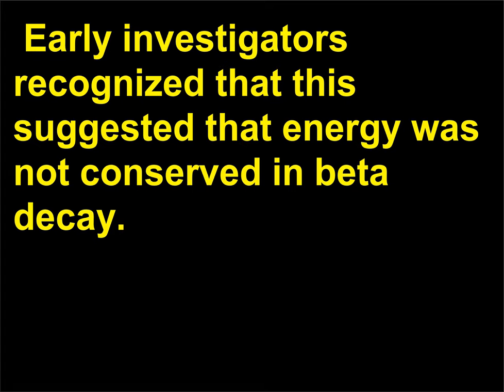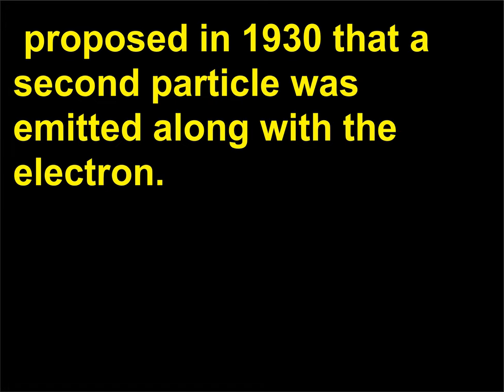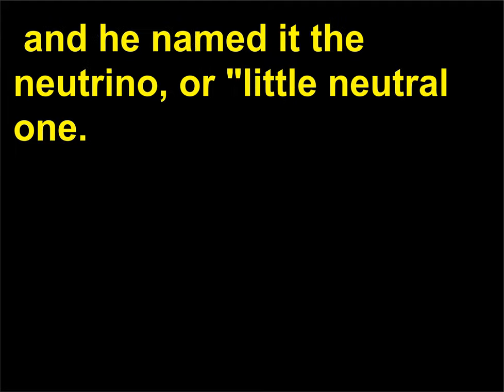Early investigators recognized that this suggested that energy was not conserved in beta decay. Austrian physicist Wolfgang Pauli (1900–1958) proposed in 1930 that a second particle was emitted along with the electron. This particle had to be neutral and have zero or extremely small mass, and he named it the neutrino, or 'little neutral one.'